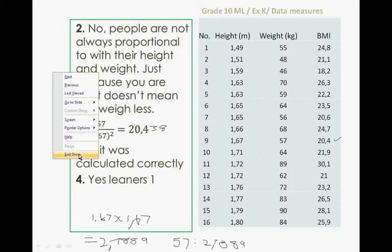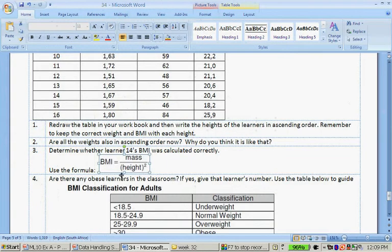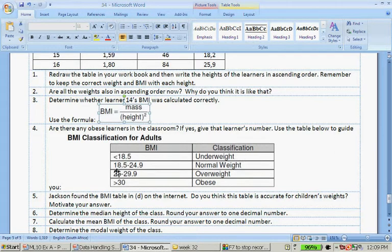Now let's quickly look at the next question, question number 4. Are there any obese learners in the classroom? If yes, give the learners number. Use the table below to guide you. Now you are underweight if your BMI is smaller than 18.5. You are normal in normal range of weight if your weight is between 18.5 and 24.9. You are overweight if your BMI is between 25 and 29.9, and you are obese if your BMI is larger than 30.